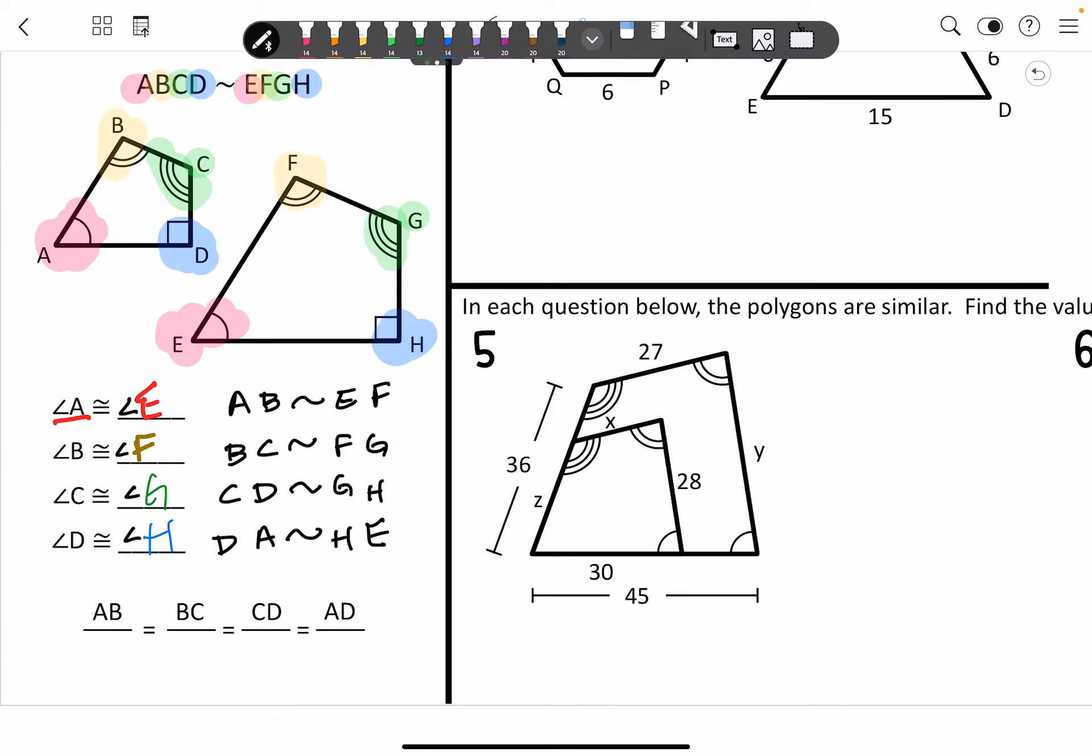So these right here, A, B, C, D, you notice they're just like catty-cornered to each other right here. You can use that to also write your proportions.